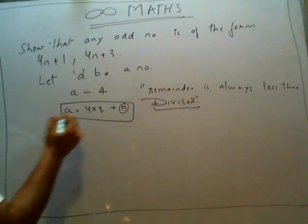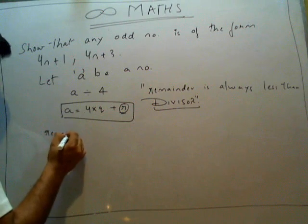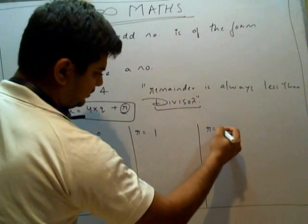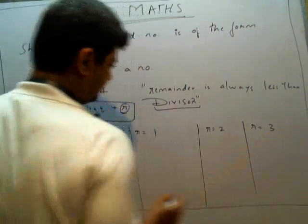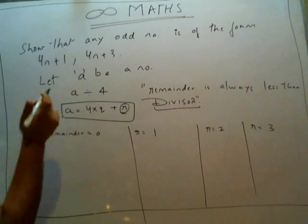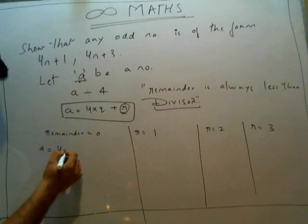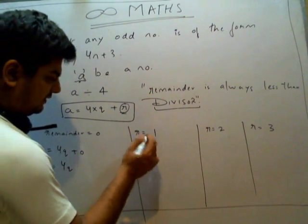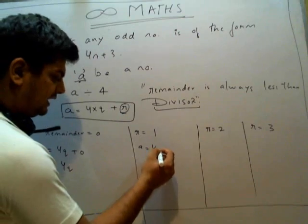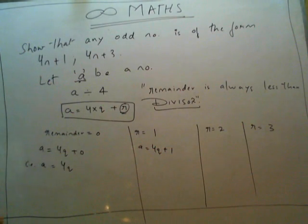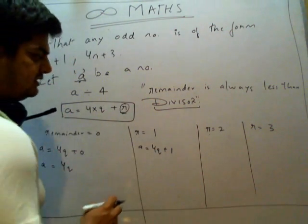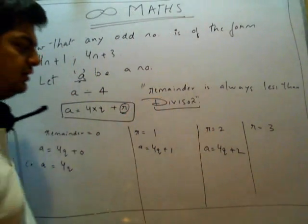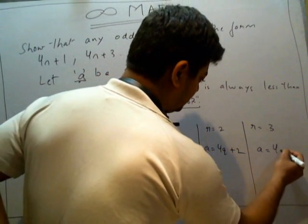Similarly here, R stands for remainder. The remainder can be 0, 1, 2, or 3. If the remainder is 0, the number falls in the category A = 4Q. If the remainder is 1, the number gives us the representation 4Q+1. If the remainder is 2, the number looks like 4Q+2. And if the remainder is 3, the number looks like 4Q+3.